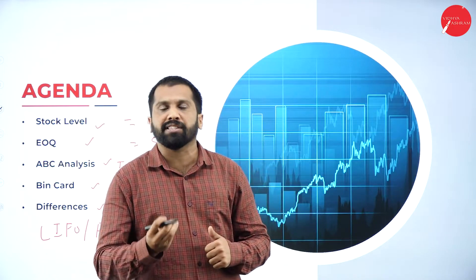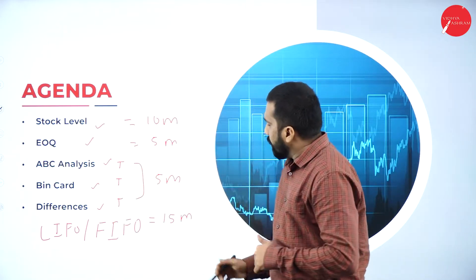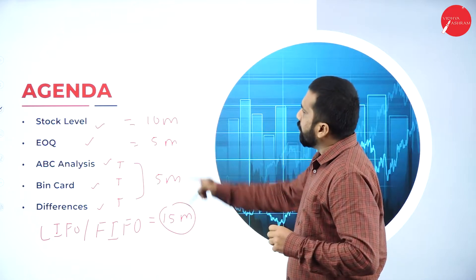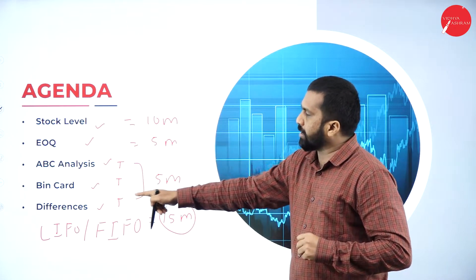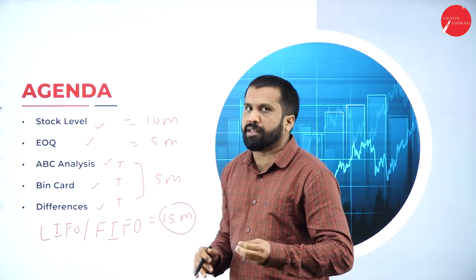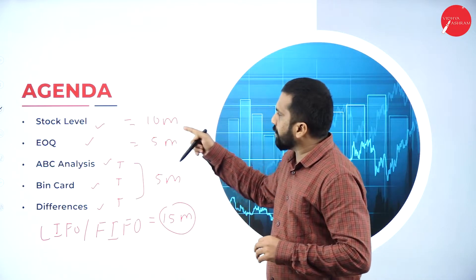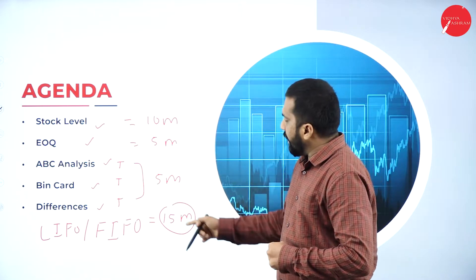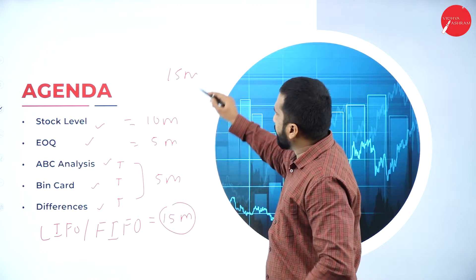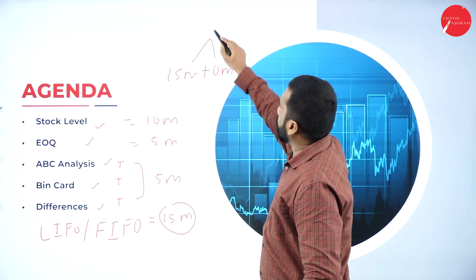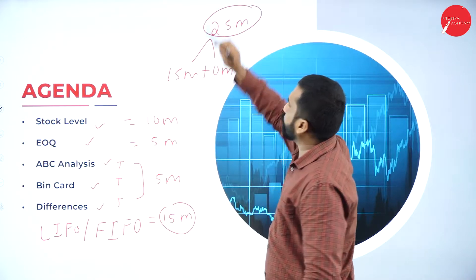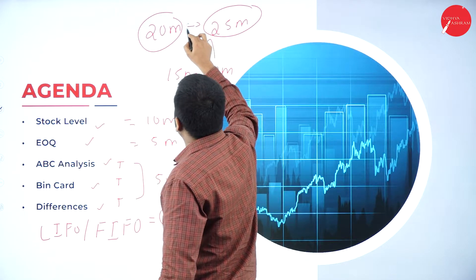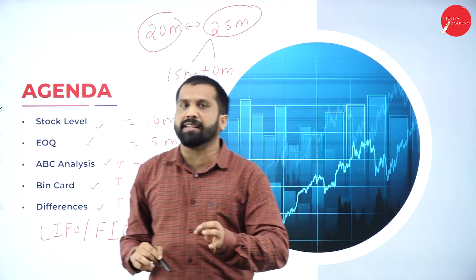What is the total marks weightage of this topic? LIFO-FIFO is compulsory — 15 marks. Stock level, EOQ, ABC, BIN card, and differences are optional. Most of the time you get questions from stock level for 10 marks, and EOQ sometimes theory, sometimes a problem. All put together, 10 marks expected from those topics. Total, you can expect 20 to 25 marks from the topic called material.